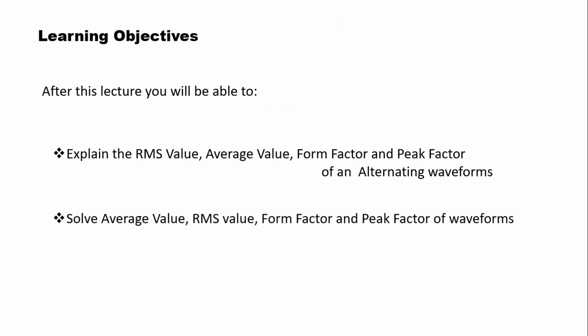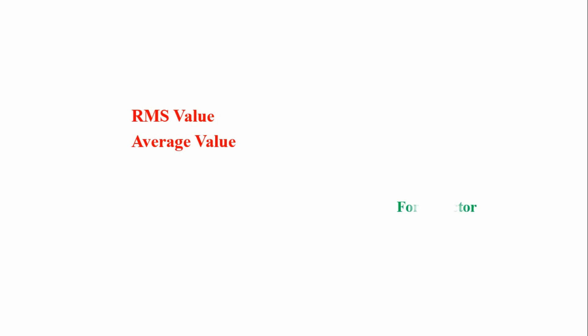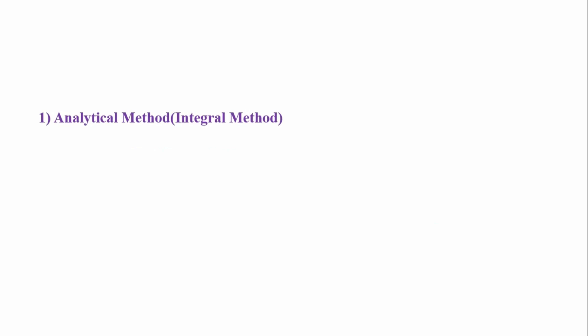Solve average value, RMS value, form factor and peak factor of waveforms. Once we have the RMS value and average value, we can easily calculate form factor and peak factor. There are certain methods to find out RMS value and average value: the first method is the analytical method or integral method, and the second method is the mid-ordinate method or graphical method.